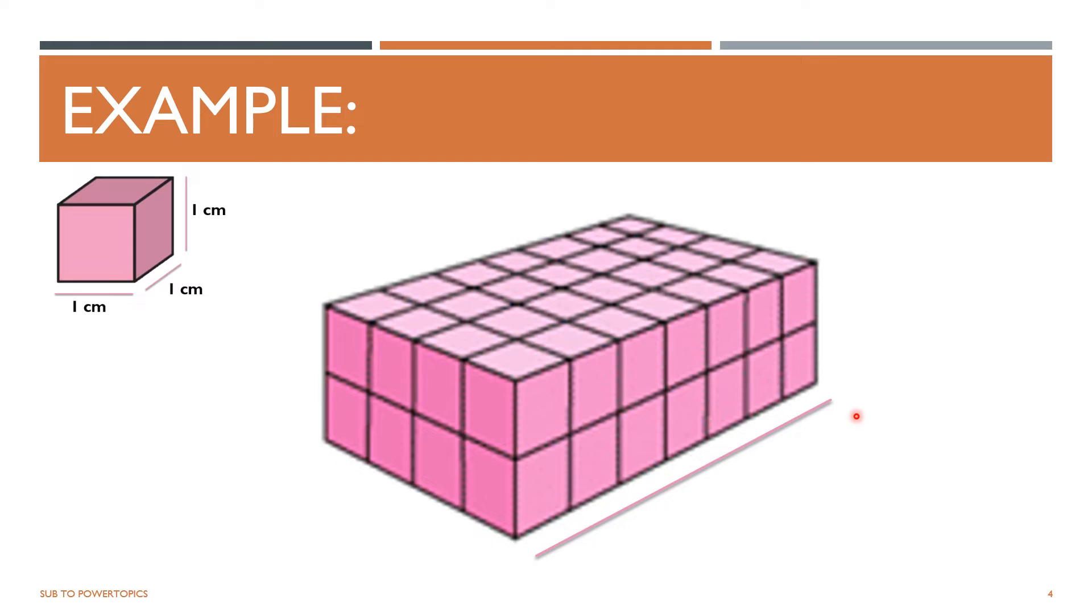So this is the length. The length is 7 cm. And how do we know this? This is because, like I said earlier, the shape is made up of centimeter cubes. So we know that each box here is equal to 1 cm. So we've got 7 cm here. So the length is 7 cm.